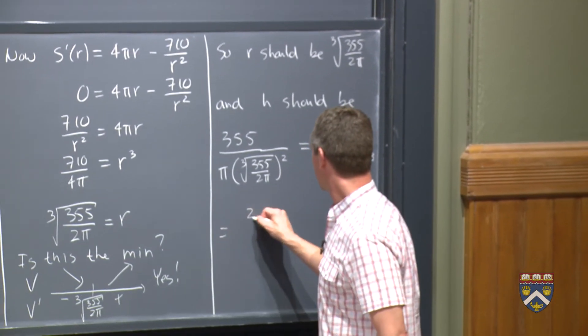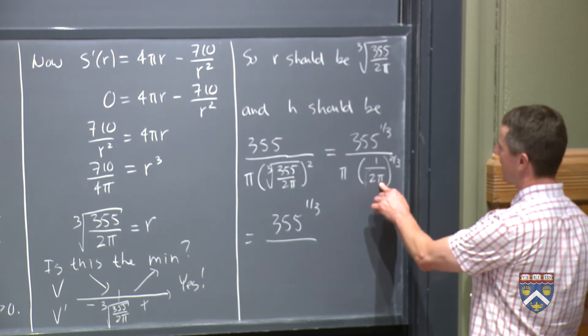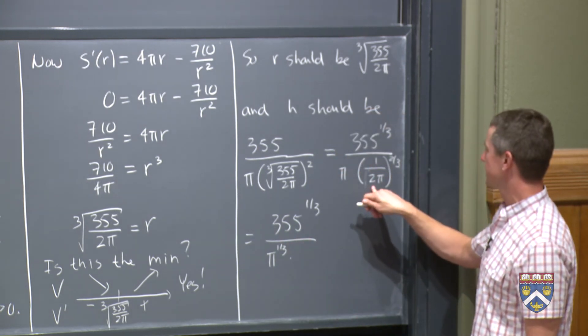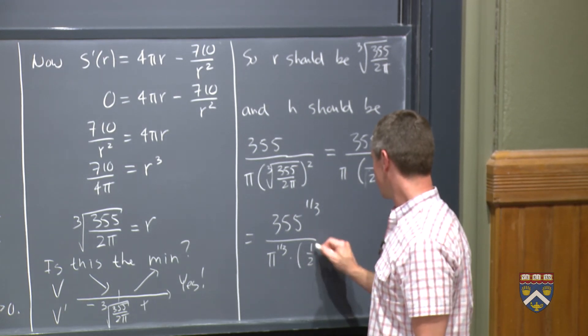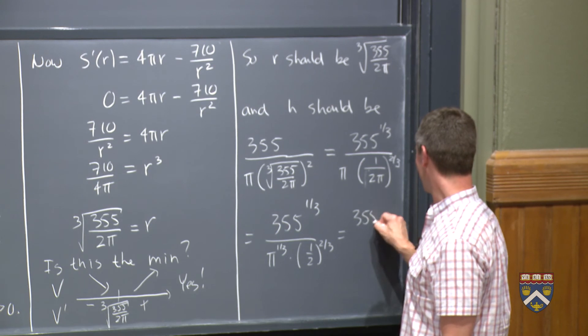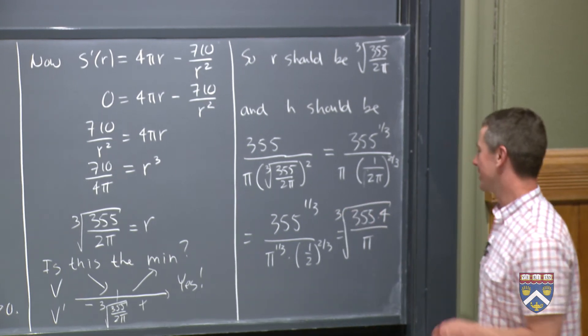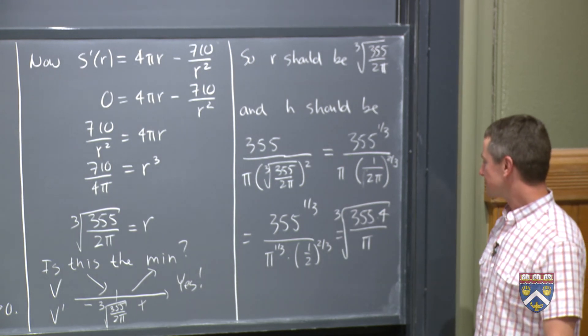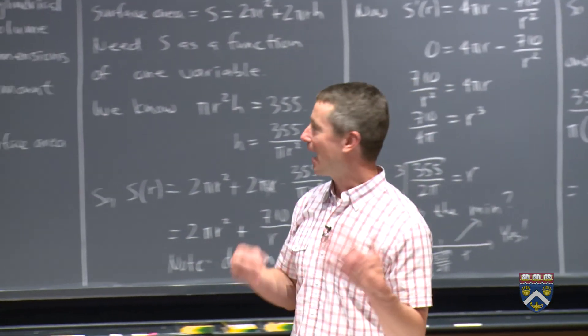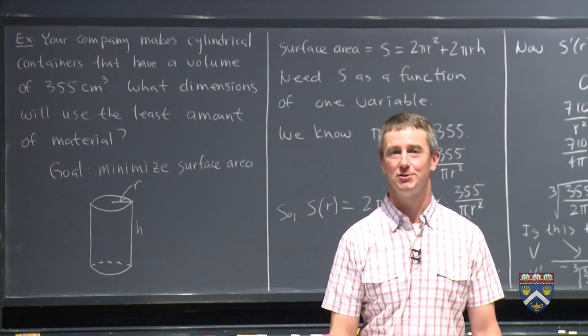And on the bottom, we've got a pi here and then a 1 over 2 pi, 1 over 2 pi to the 2 thirds. So let's simplify that just a little bit more, 355 to the 1 third. And this is a pi to the 2 thirds, so this is like a pi to the 1 third on the bottom. And on the bottom, I've also got this 1 half to the 2 thirds. All right, maybe you won't want to simplify so much as I'm doing here. But I think that this is going to come out to be 355 times 4 all over pi, the cube root of that. Because this 1 half comes to the top, it's being squared, and the 1 third means that we're taking the cube root of that and then we've got a pi to the 1 third on the bottom. In any case, the point of this is that we are, by using calculus, we can really find the dimensions that do minimize this and that will allow your company to save some money, maybe save a lot of money and also do some good for the environment.